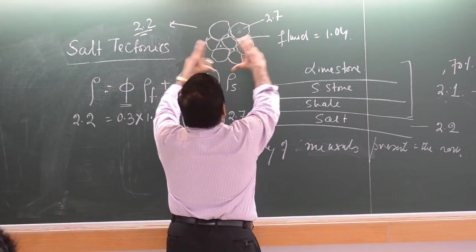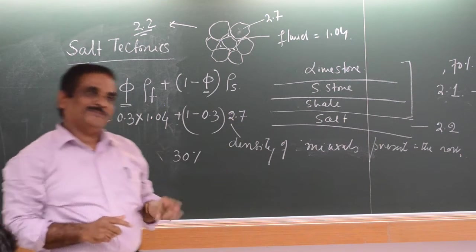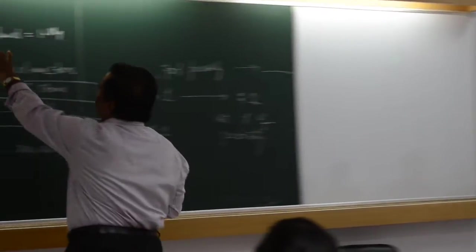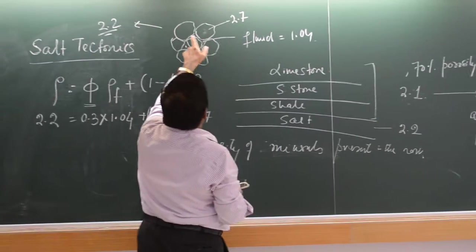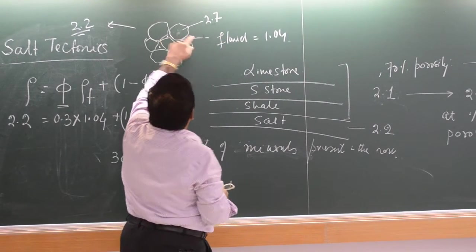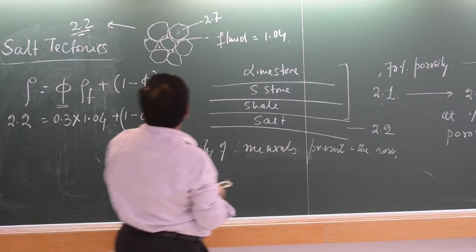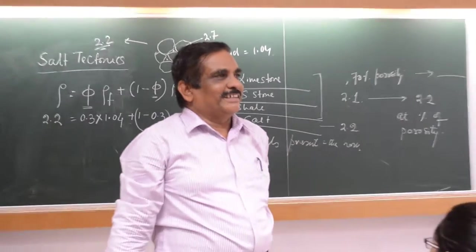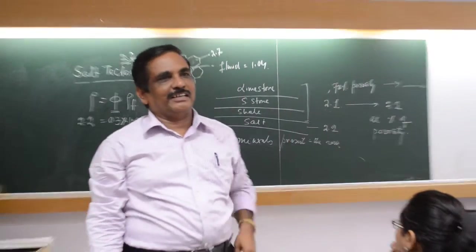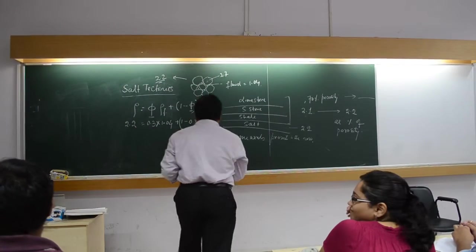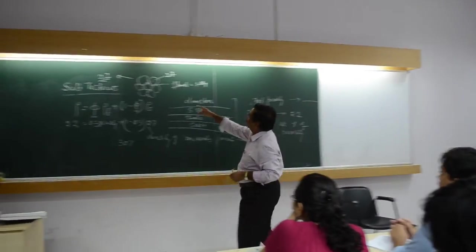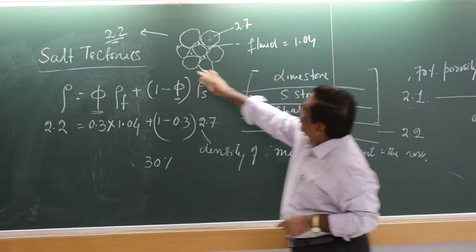Now, you have to increase this density to 2.2. This has to be compressed and the density has to increase to 2.2. This will become 2.2. This 2.7 will be reduced together — and it will become 2.2. It is still a bit unclear for some. For now, you have to apply this formula. This is the picture: in this stage the rock is like this.